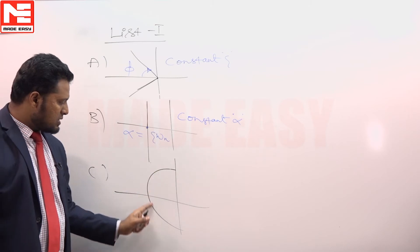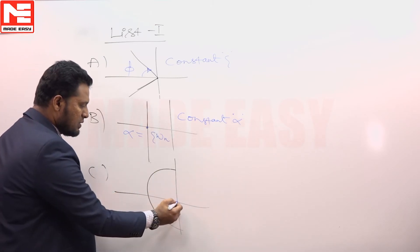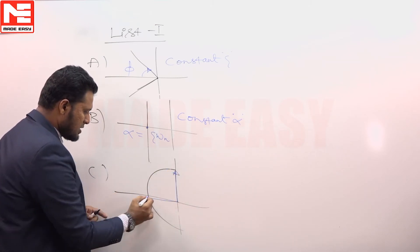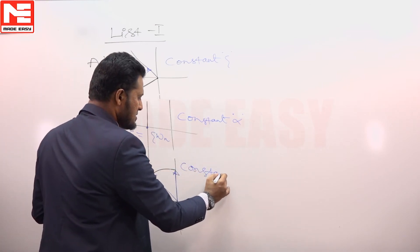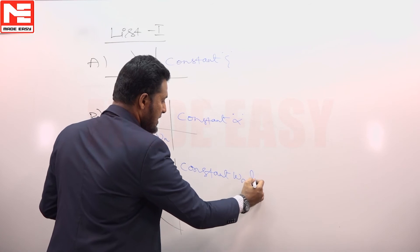Along this locus omega n, the natural frequency length of the phasor is omega n. Omega n is constant, so this is constant omega n locus.